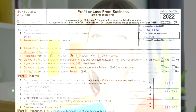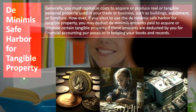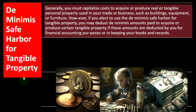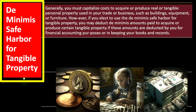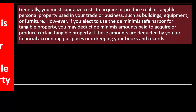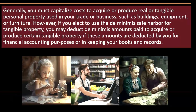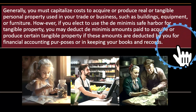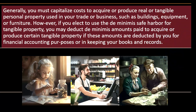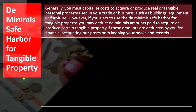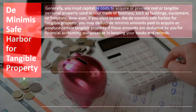We're focused here on the expense side of things, and in particular the de minimis safe harbor for tangible property. Generally, you must capitalize costs to acquire or produce real or tangible personal property used in your trade or business, such as a building, equipment, or furniture. However, if you elect to use the de minimis safe harbor for tangible property, you may deduct de minimis amounts paid to acquire or produce certain tangible property if these amounts are deducted by you for financial accounting purposes or in keeping your books and records.